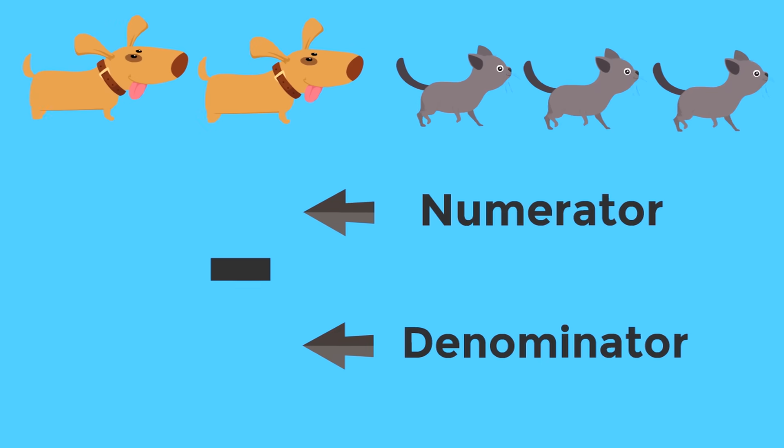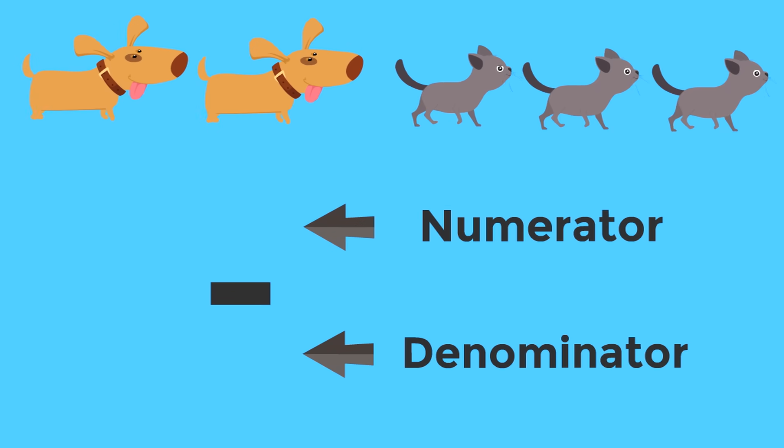Remember here's what a fraction looks like. It's got a line in the middle with the top number being the numerator and the bottom number is the denominator. So the total number of pets is five. What number is the denominator? What number goes on the bottom? Yeah. Five. Five is the denominator. It tells us the total number of pets.